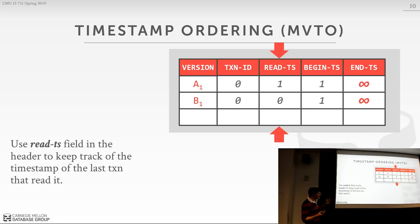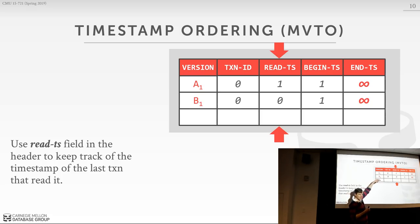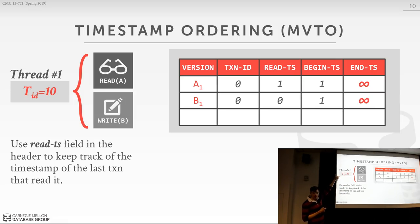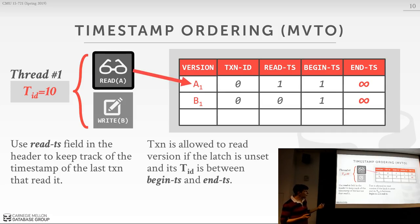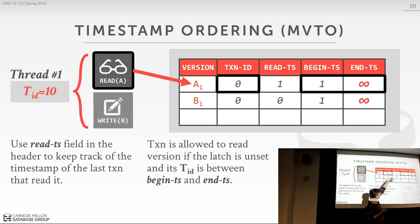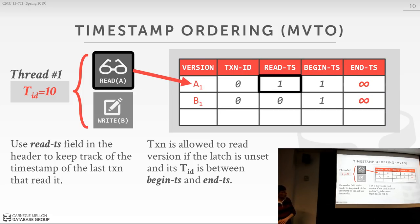We'll also have a read timestamp to keep track of the timestamp of the last transaction that read this tuple. Under the basic timestamp ordering protocol, we use this to figure out whether a transaction in the future has read the old version while we're in the past logically and trying to write a new one. Say a read transaction comes along with timestamp 10. We allow it to read A if the transaction ID is zero — meaning nobody holds the latch — and our transaction ID is within the range defined by the begin and end timestamps. Since 10 is between 1 and infinity, we go ahead and update the read timestamp to 10.